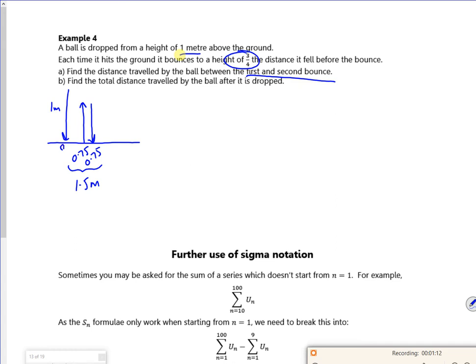Because it bounced the first time, then it went up 75 centimeters, come down 75 centimeters to the second bounce.